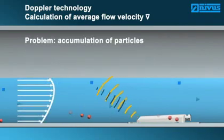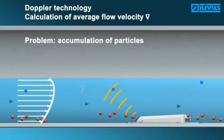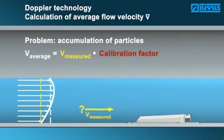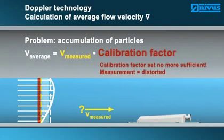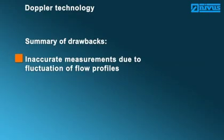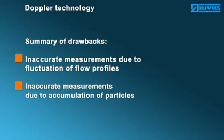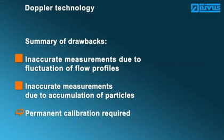Accumulation of particles generates a stronger measurement signal and hence is determined by the sensor as the measurement spot. A local variation therefore creates a distorted reading which varies from the calibration. The shortcomings of Doppler measurement systems as a brief conclusion: faulty results at varying flow profiles, faulty results in case of changing particle concentration, and no permanent calibration possible.